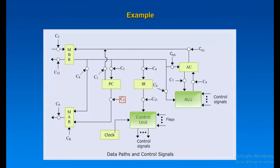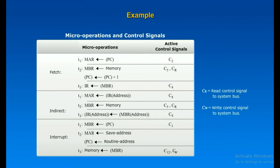The control signal C2 moves the content of PC to MAR. With CR to memory and C5, the memory content is transferred to MBR. With C4, the content of MBR is moved to IR, and with C13, the content of IR is moved to the control unit for decoding. A control signal from the control unit temporarily opens the gate to let data pass. The control unit controls the operation of the ALU by a set of control signals that activate various logic circuits and gates within the ALU. The control unit also sends control signals out onto the control lines of the system bus, for example, memory read.